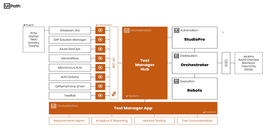Here is a high-level architectural overview. Test Manager comes in two parts: the Test Manager Hub and the Test Manager App. The Test Manager Hub is our backend system, our server component. The Test Manager App is our front-end web application that sits on top of the Test Manager Hub.